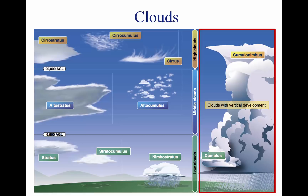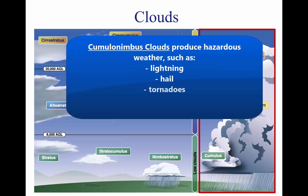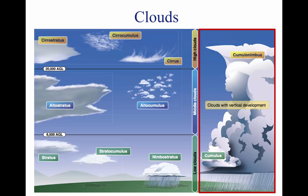Cumulonimbus clouds contain large amounts of moisture and unstable air, and usually produce hazardous weather phenomena such as lightning, hail, tornadoes, gusty winds, and wind shear. To pilots, the cumulonimbus cloud is perhaps the most dangerous cloud type. Since rising air currents cause cumulonimbus clouds, they are extremely turbulent and pose a significant hazard to flight safety. For example, if an aircraft enters a thunderstorm, the aircraft could experience updrafts and downdrafts that exceed 3,000 feet per minute. In addition, thunderstorms can produce large hailstones, damaging lightning, tornadoes, and large quantities of water, all of which are potentially hazardous to aircraft.